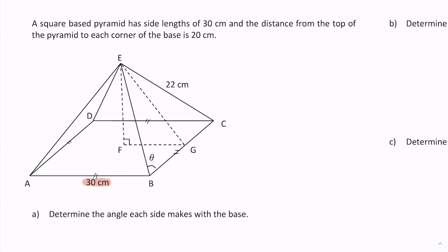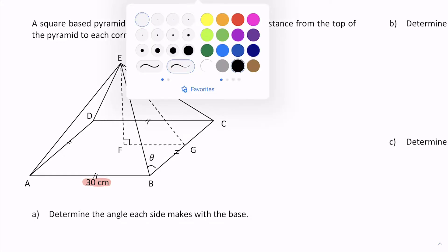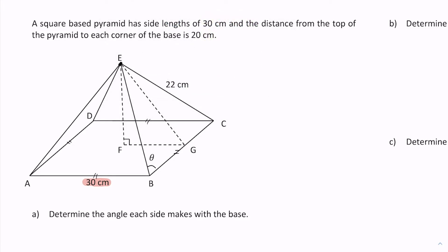The distance from the top of the pyramid to each corner is 20 centimeters. In other words, the distance from the top of the pyramid to each corner of the base is 20. That could be C, it could be B, it could be A, it could be D—they're all going to be the same value.